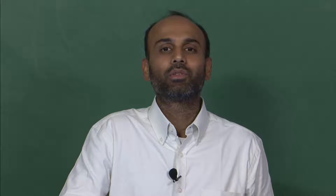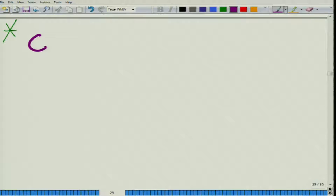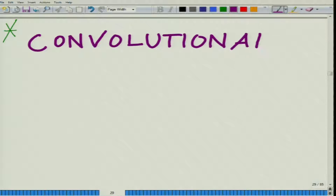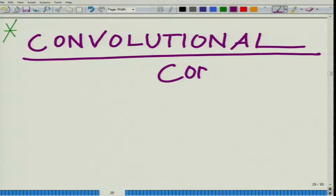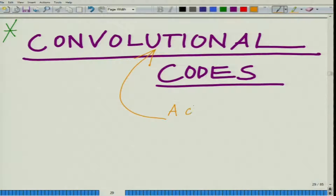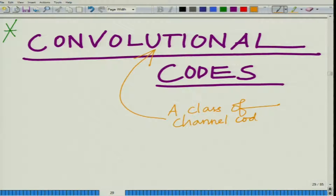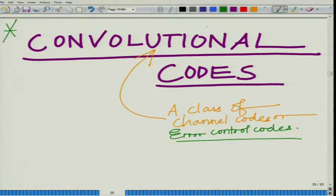Hello, welcome to another module in this massive open online course. We are looking at channel coding, and in this module we start looking at a different class of channel codes termed as convolutional codes. A channel code is basically a paradigm which introduces systematic redundancy to recover from errors introduced by the channel. This class of channel codes is also known as error control codes.